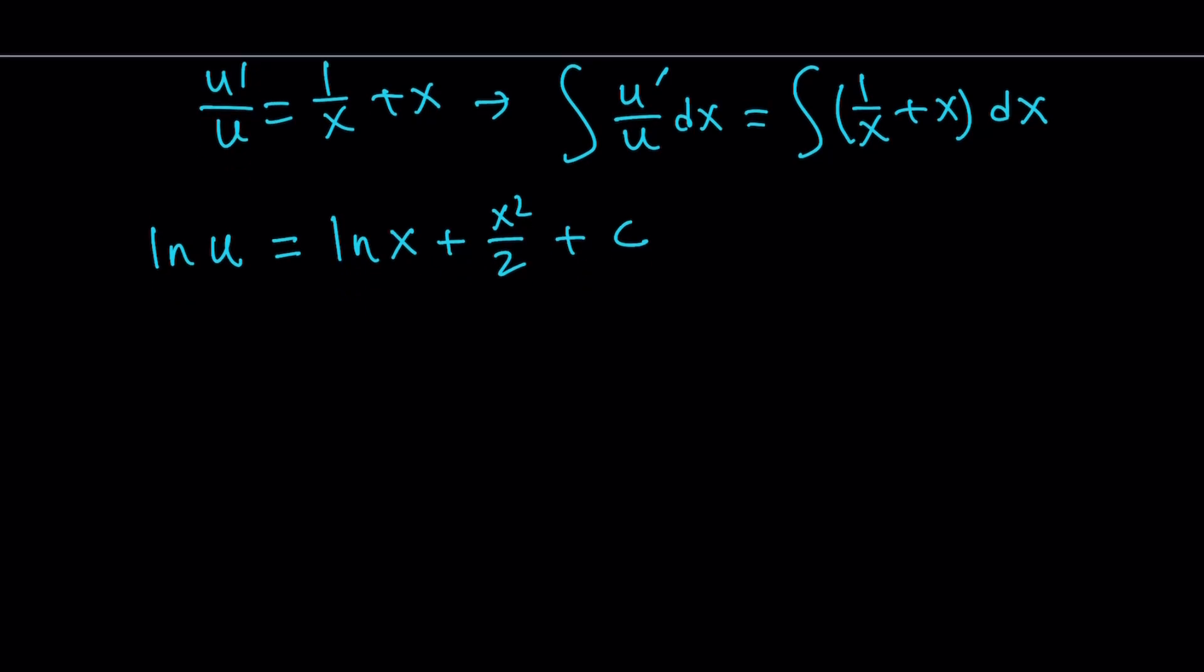Great. Now, since we have the ln u, I want to get u from here. And u is equal to e to the power ln u. So it's equal to e to the power ln x plus x squared over two plus c. Lots of things. Now, notice that these can be separated. ln e to the power ln x times e to the power x squared over two times e to the power c.